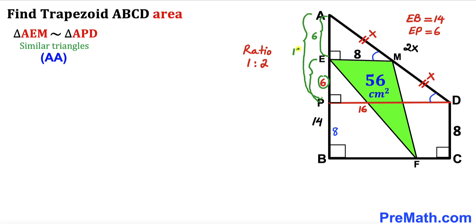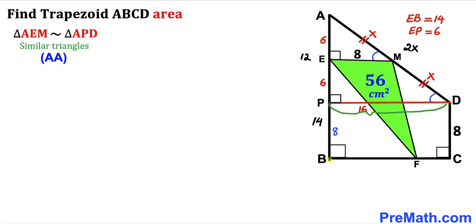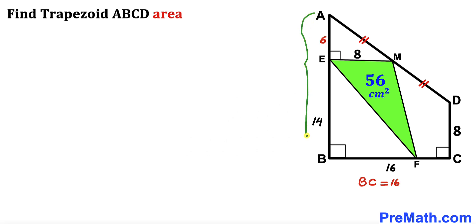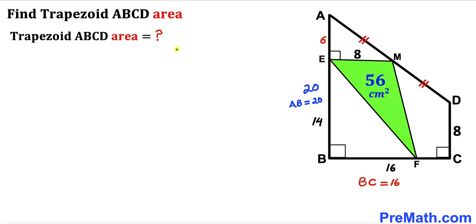We can see that PD equals BC. Since PD is 16, BC is 16 centimeters as well. Finally, EB is 14 and AE is 6, so the whole side AB equals 14 plus 6, which gives us 20 centimeters.